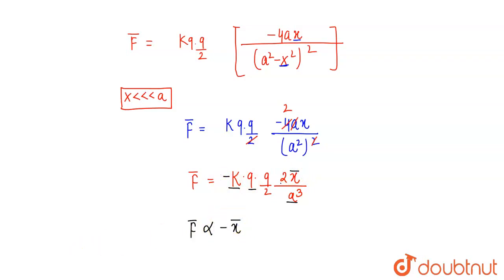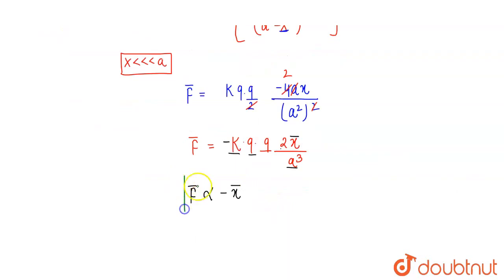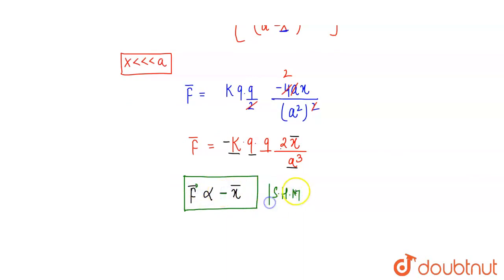After simplification, the net force is directly proportional to displacement X and acts in the opposite direction. This is the condition for simple harmonic motion — the restoring force is proportional to and directed opposite to the displacement.